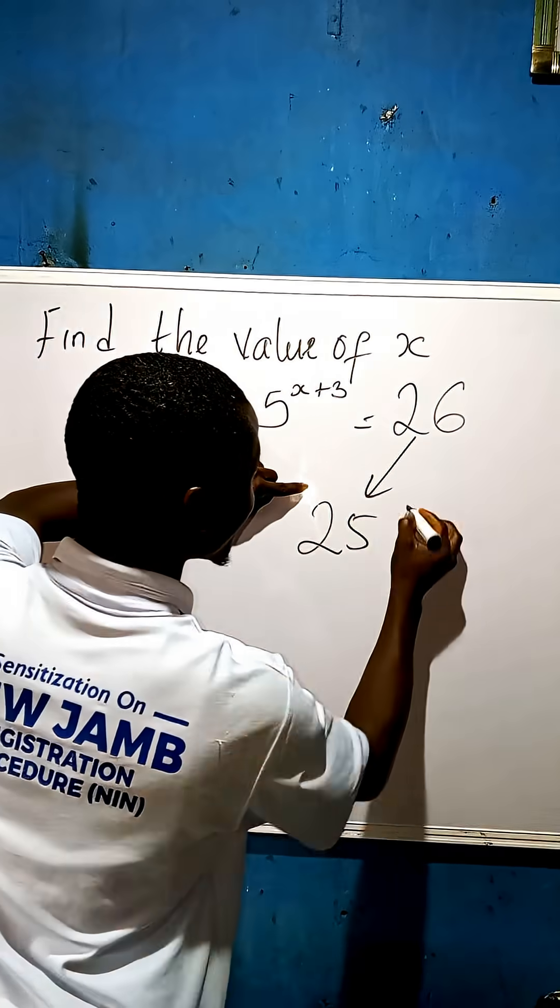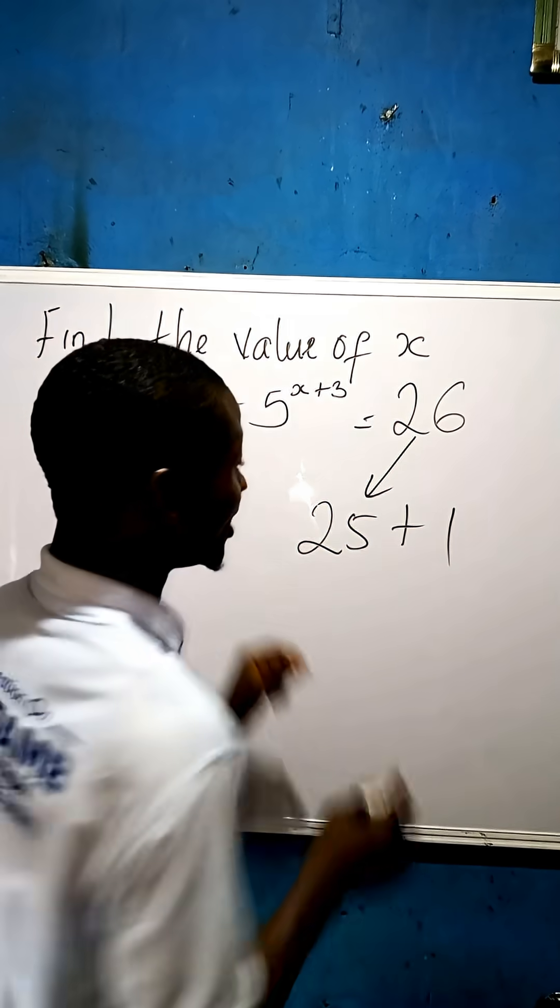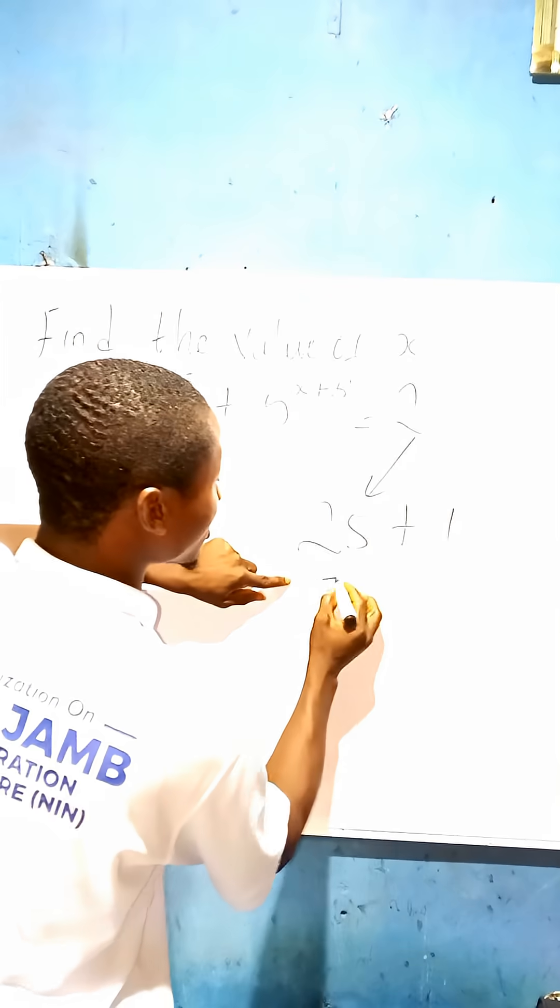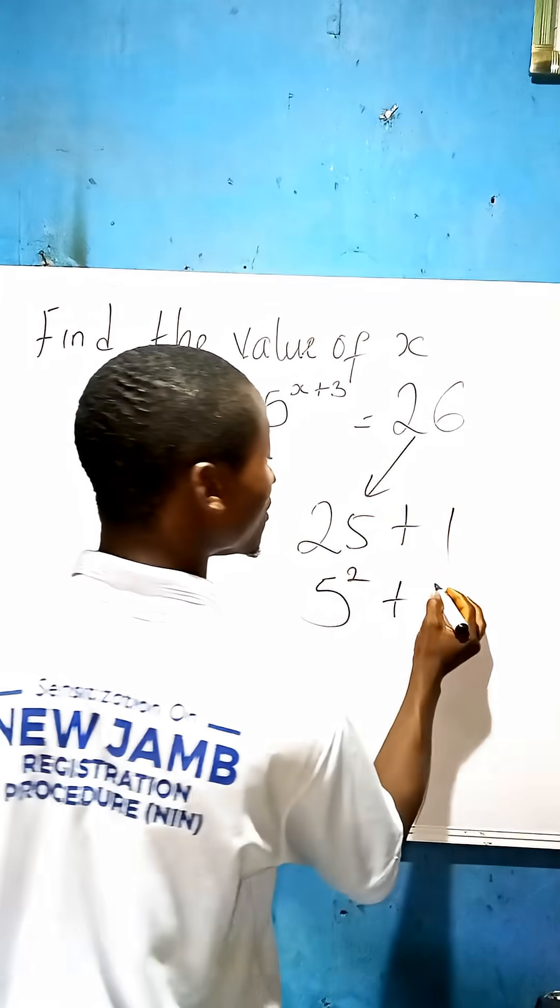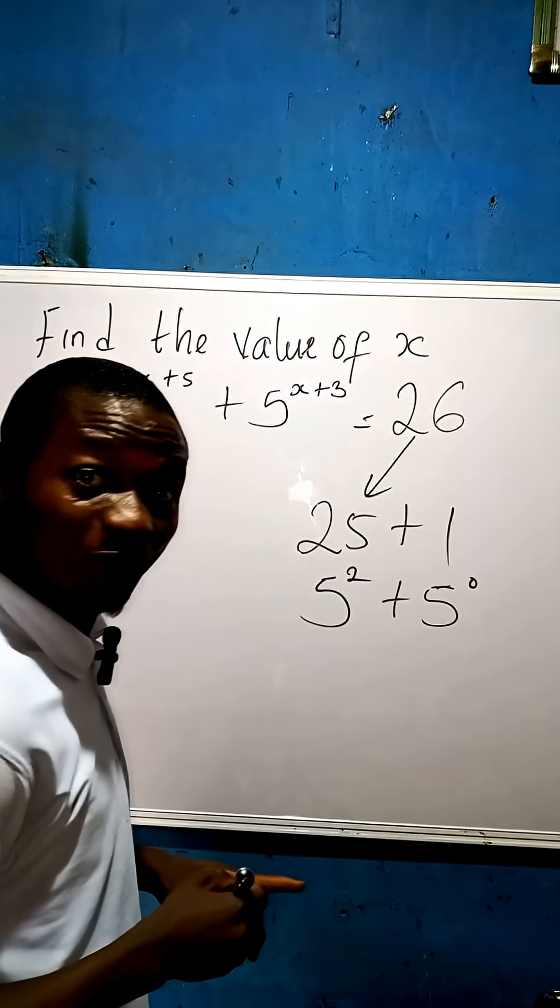25 plus 1. Agreed? We can also write 25 as 5 to the power of 2, plus this 1 we can write as 5 to the power of 0. Hope you agree and follow.